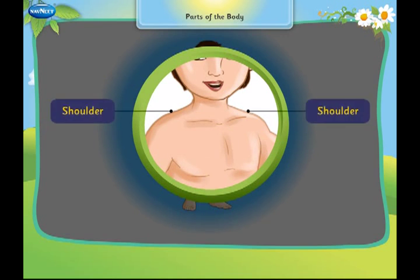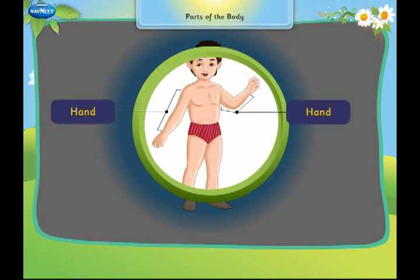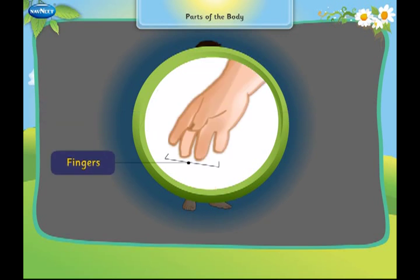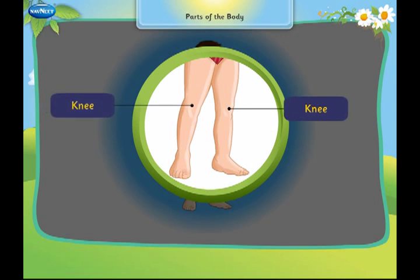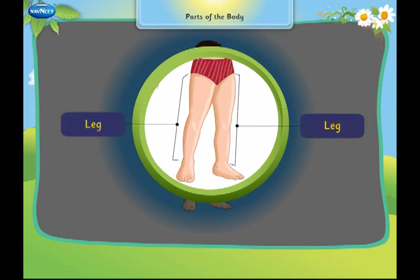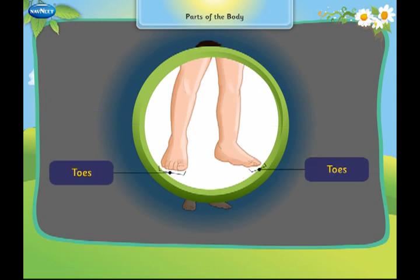This is my shoulder. These are my hands. These are my fingers. This is my stomach. These are my knees. These are my legs. These are my toes.